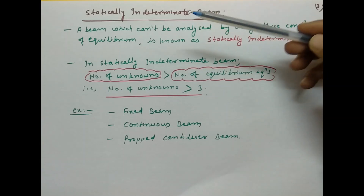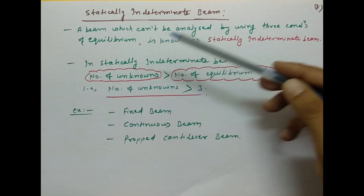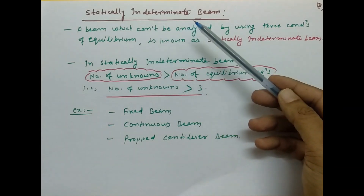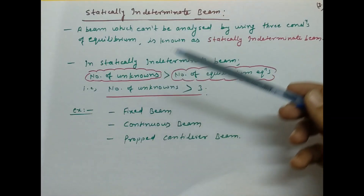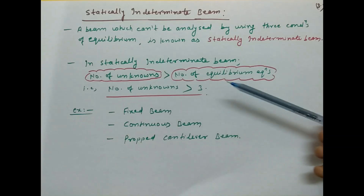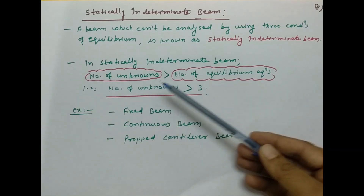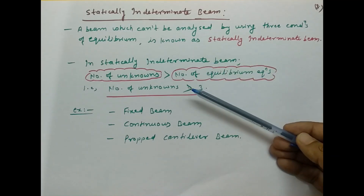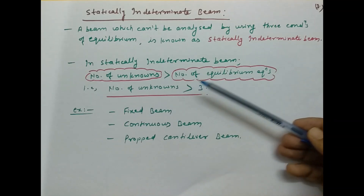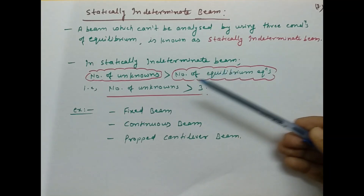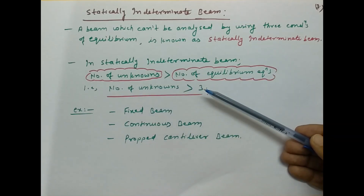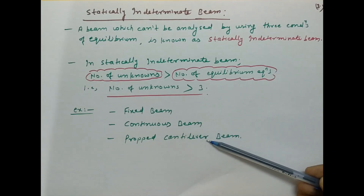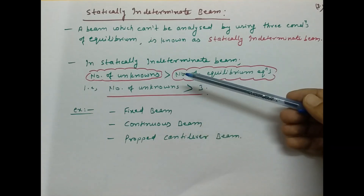अब हम बात करते हैं statically indeterminate beam की। A beam which cannot be analyzed by using three conditions of equilibrium is known as a statically indeterminate beam. इसमें number of unknowns, number of equilibrium equations से ज्यादा होता है, यानि number of unknowns more than three होते हैं। Examples: fixed beam, continuous beam, and propped cantilever beam — ये statically indeterminate beam के examples हैं।